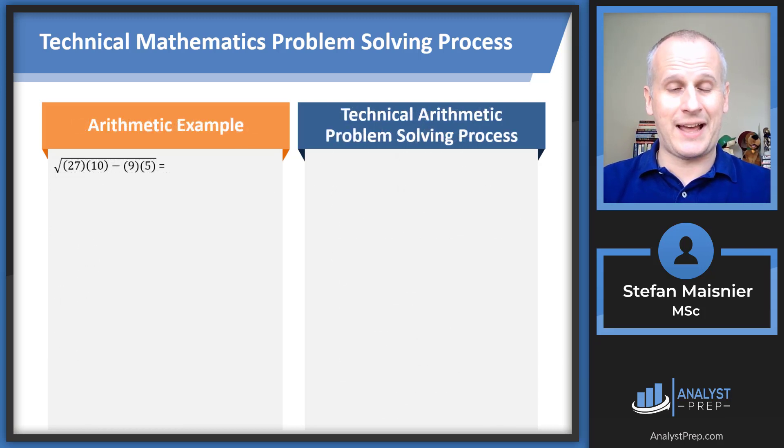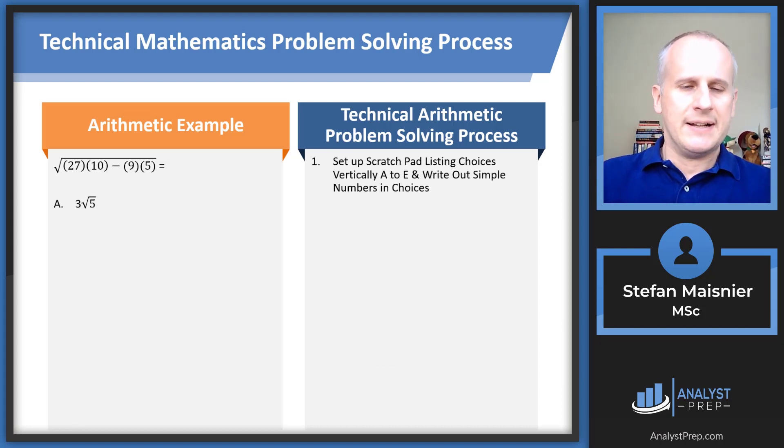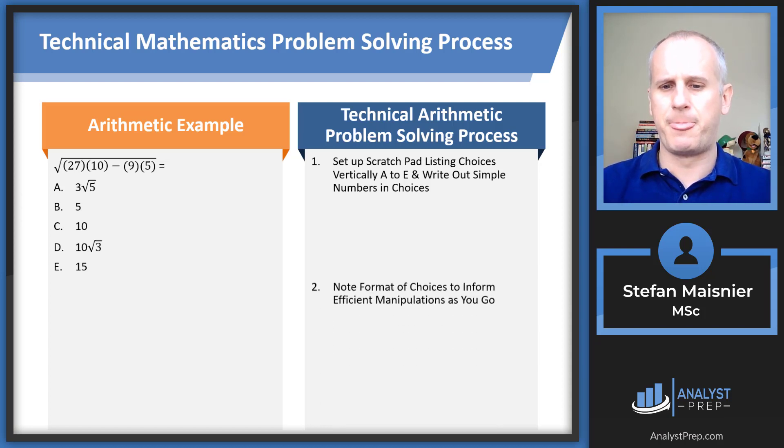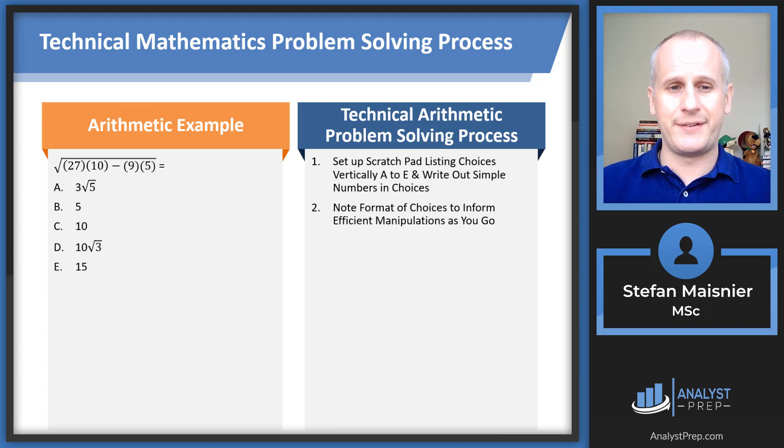So let's take a look at an arithmetic example next. We've got a clearly technical math question, giant square root with some numbers in parentheses underneath. Just as before, set up the scratchpad, listing the choices vertically A to E, and write out the numbers in the choices. This time I probably would write them out because we've just got simple numbers, albeit with square roots.